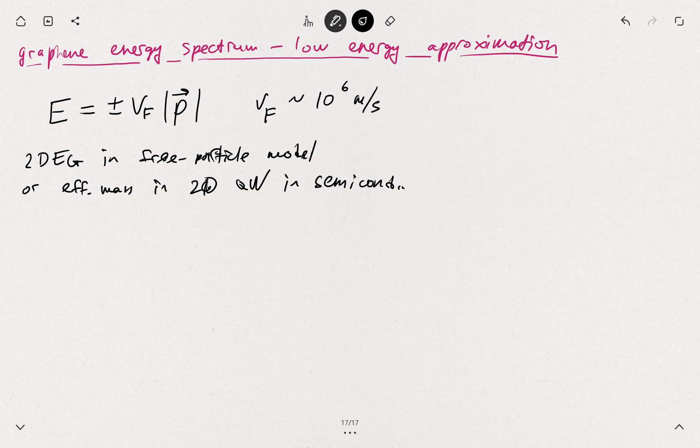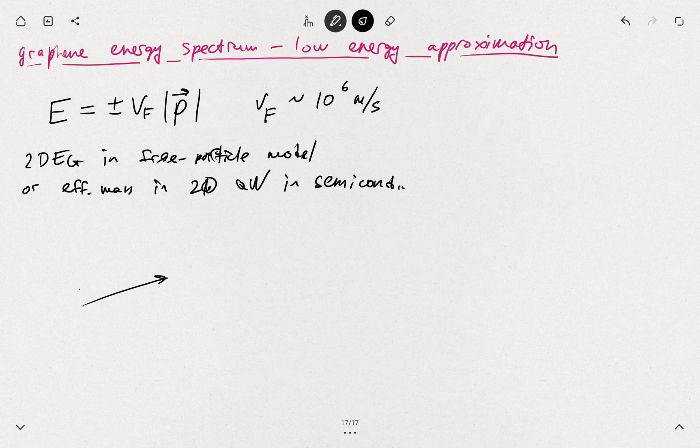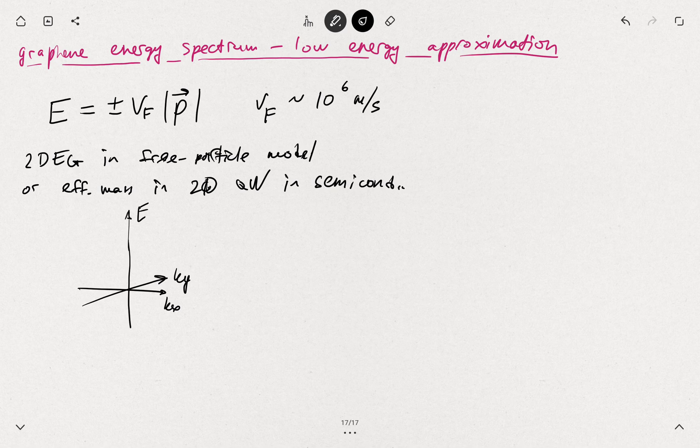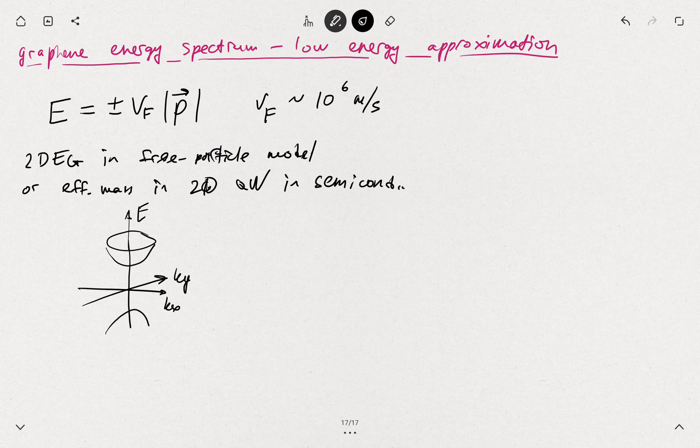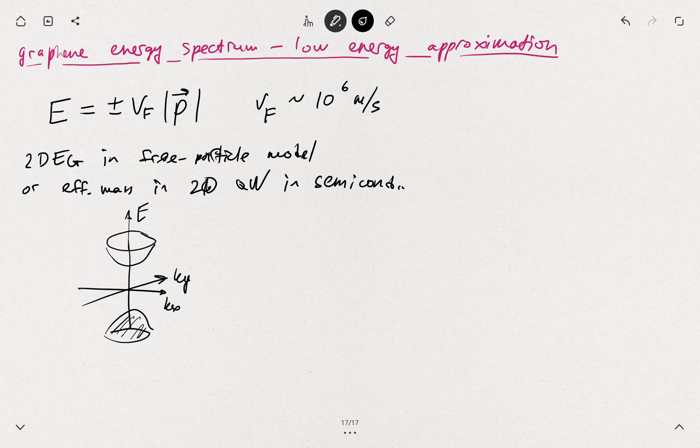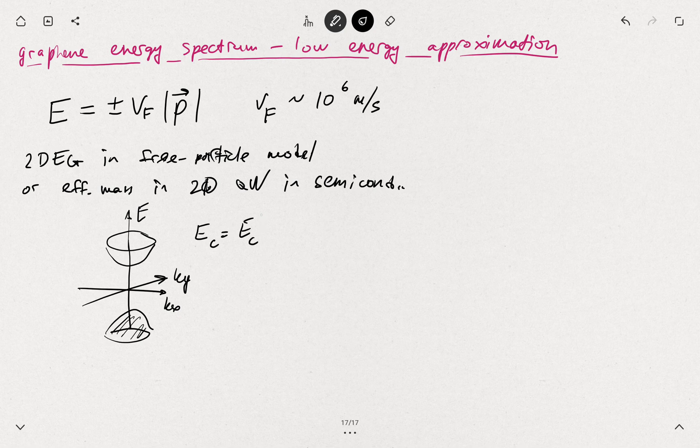We will have this as the energy scale. We will have a parabolic spectrum with the band gap opened. So this will be filled with electrons, this is empty, and we will have the conduction band energy equals the ground state energy minus the dispersion part.